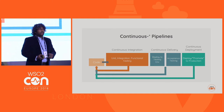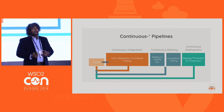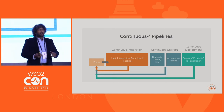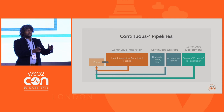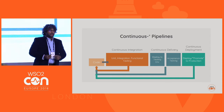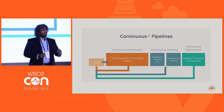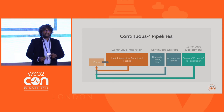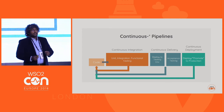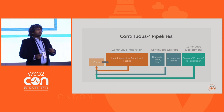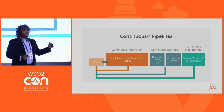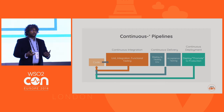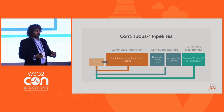So when we are discussing continuous pipelines, it usually has three stages: the integration stage, delivery stage, and the deployment stage. So usually any pipeline gets triggered by a code commit — that's the usual practice whenever we are building a pipeline.